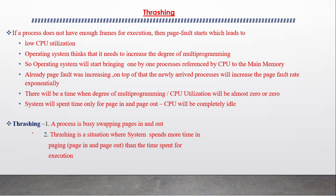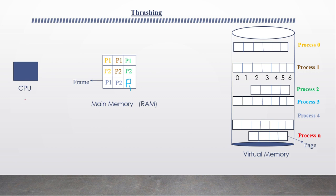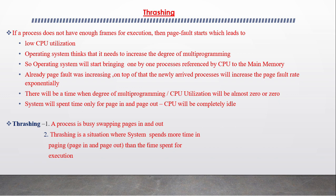Let us define thrashing. A process is busy swapping pages in and out. Not only one process — all processes present in main memory will be busy swapping pages in and out. Thrashing can be defined as a situation where the system spends more time in paging than the time spent for execution, so there will be almost no execution happening — only the activity of page-in and page-out.